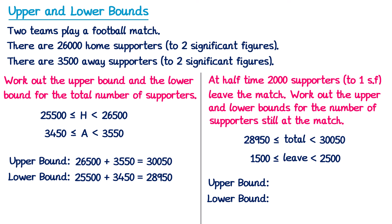For the upper bound, your first instinct might be to do the upper bound for the total — 30,050 — subtract the upper bound for those that leave — 2,500 — giving 27,550. But for a subtraction, this is actually incorrect. If we want the maximum number of people still at the match, we want the maximum amount of supporters — 30,050 — but the lowest amount to actually leave. So we subtract the lower bound of 1,500, not the upper bound. A large number minus a small number gives a large answer, so subtracting 1,500 gives the upper bound of 28,550.